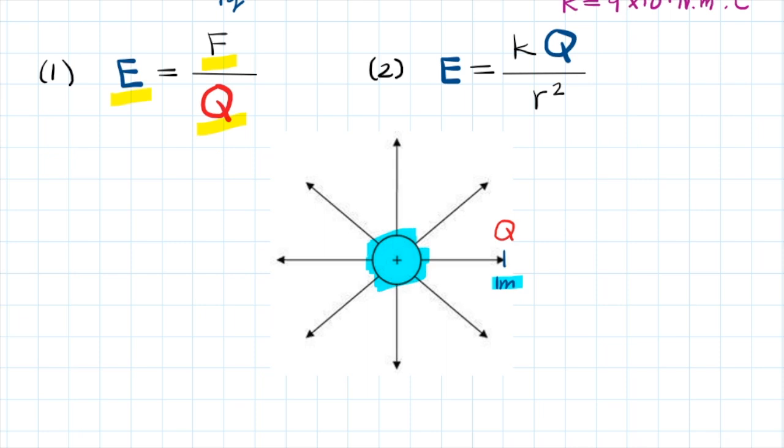So we take our test charge, Q, and we're going to put it over here, 1 meter away from this positive charge. When we put the test charge at this point, we know, firstly, the charge that this test charge possesses, and we measure that charge in Coulomb.